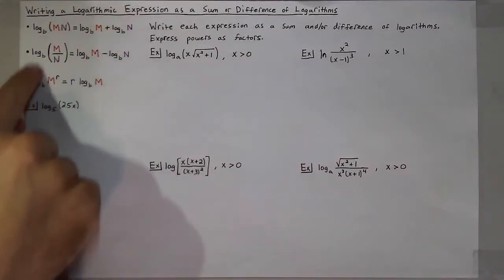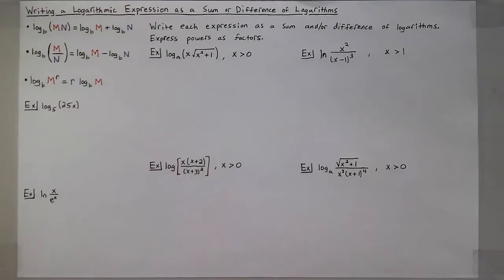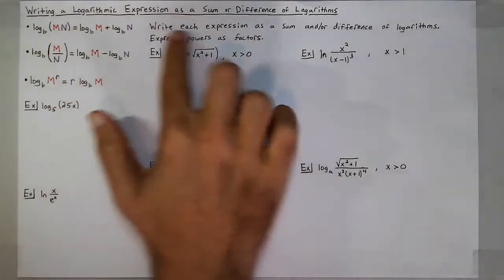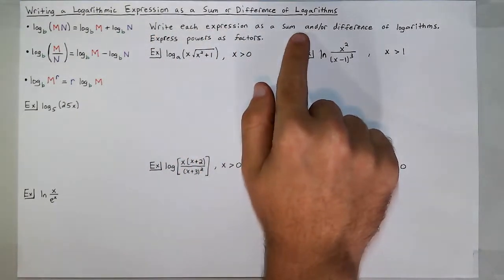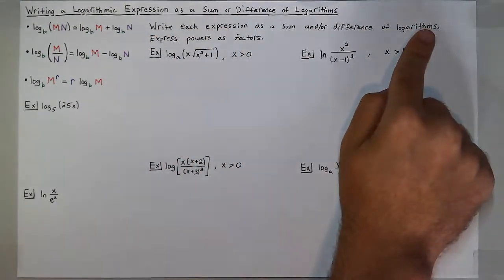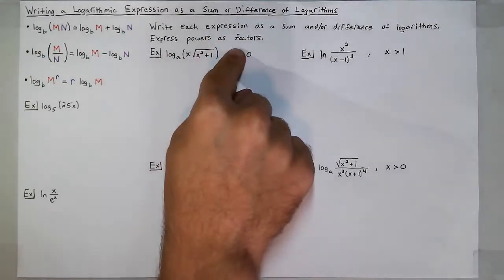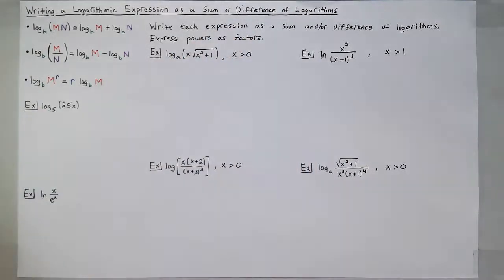So I rewrote those three important properties from the last lesson up here on the top left as reference. And now let's get into these examples where we're going to write each expression as a sum and or difference of logarithms and express powers as factors. And I'll explain what I mean by that whenever it comes up.